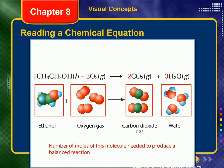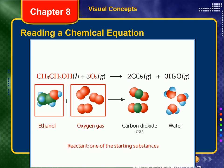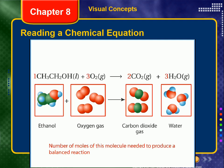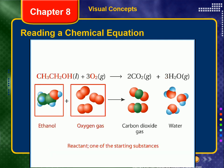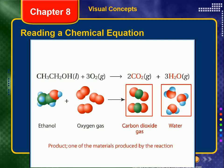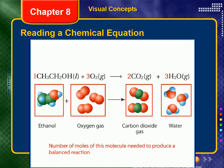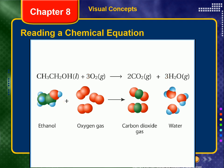The coefficient — in this ethanol example we have 1, 3, 2, and 3 — means that for every one ethanol molecule to react in this way, we need three oxygen molecules, and we will produce two carbon dioxide molecules and three water molecules. If we do not have these molecules available at this ratio, the reaction will not progress.